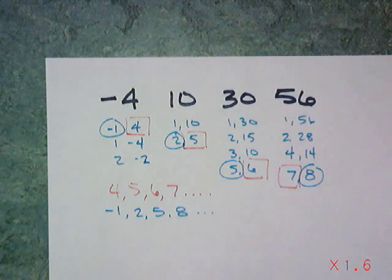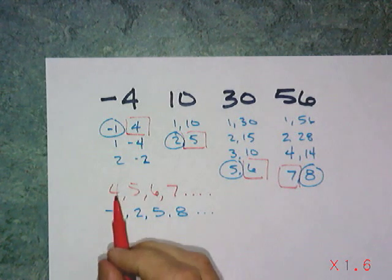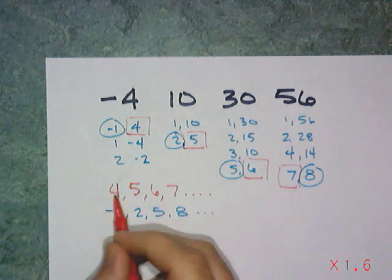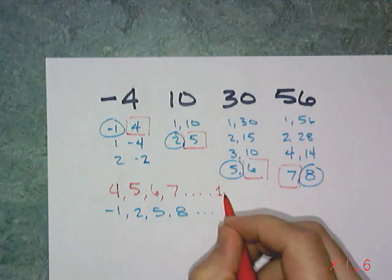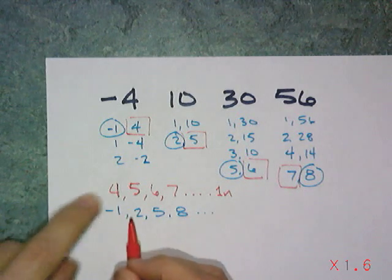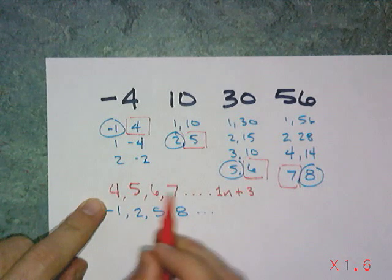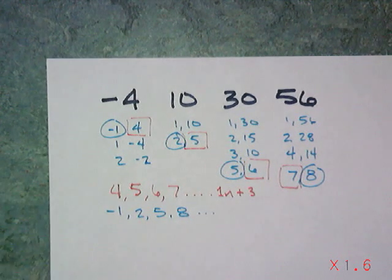4, 5, 6, 7 is one pattern. Another pattern is negative 1, 2, 5, and 8. The red pattern, that's not a problem. That's a constant difference of 1, common difference 1. So that's 1n. And then you would have to add 3 to get 4, 5, 6, 7.